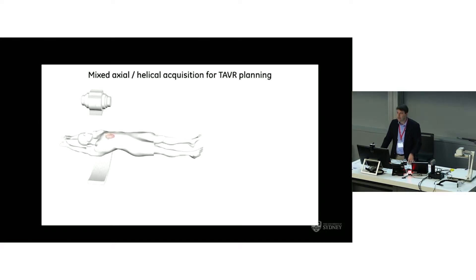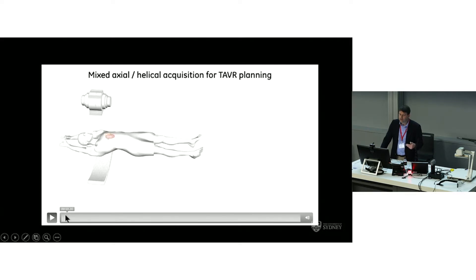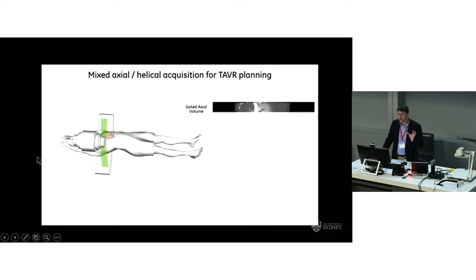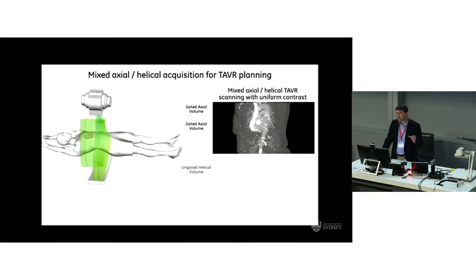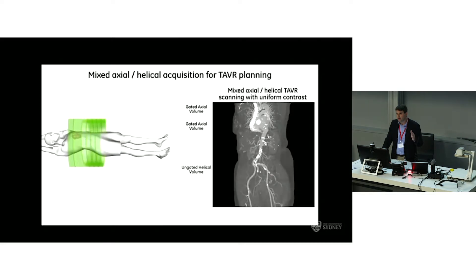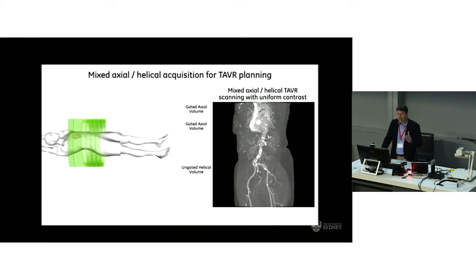In terms of how CT is done, there are lots of different protocols, but generally a two-phase protocol is used: an ECG-gated acquisition to look at the annulus and valve at a particular phase, followed by a rapid acquisition of the vascular structures. Ideally it's done with a single contrast bolus, though sometimes it's still done in two separate injections. At the end we get a motion-gated image of the annulus and the whole vascular tree.